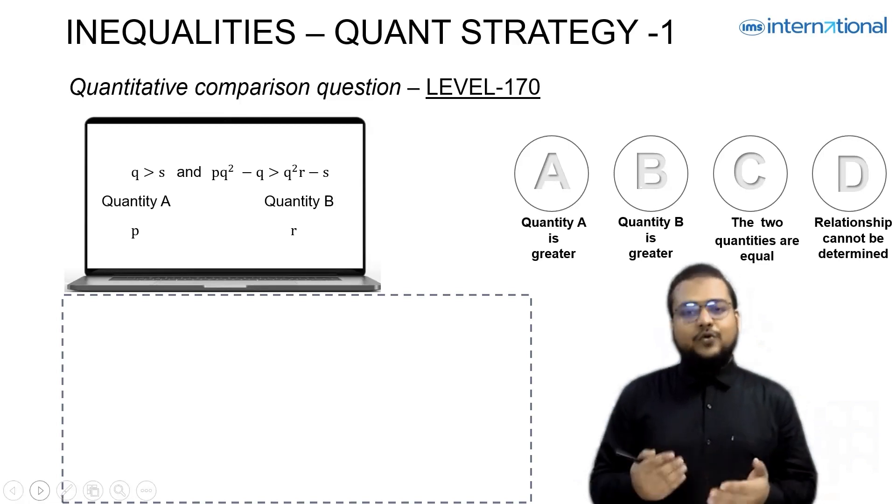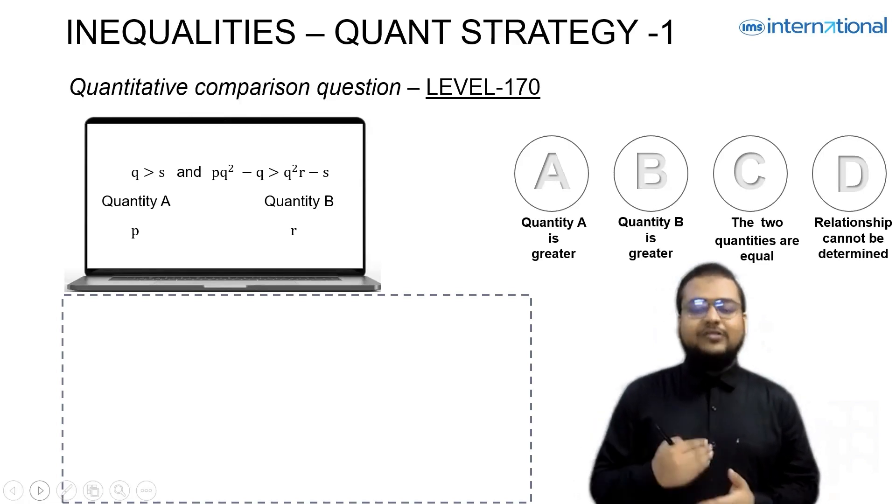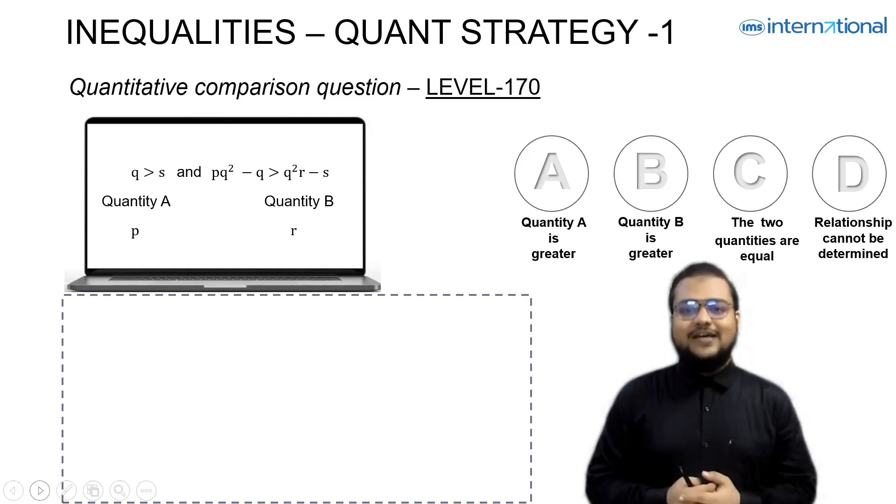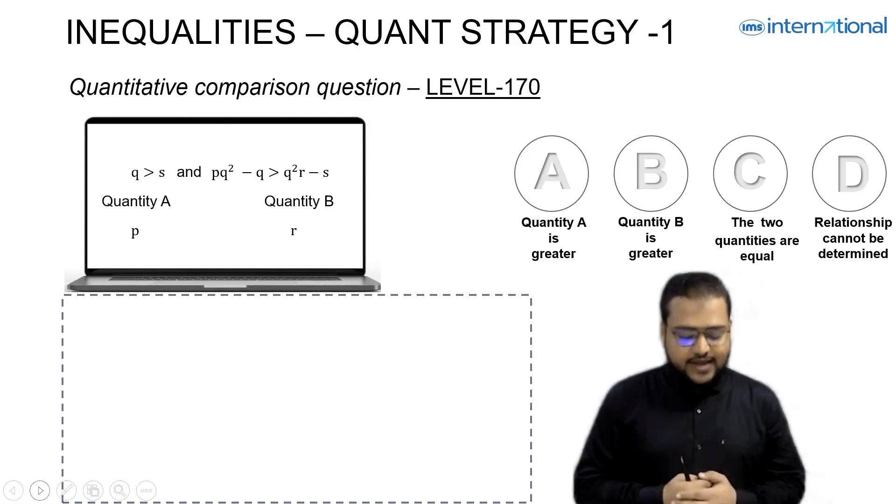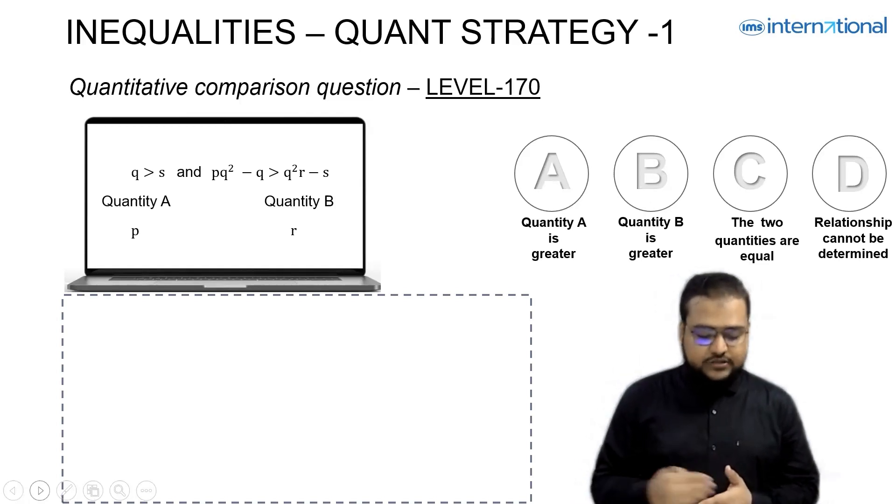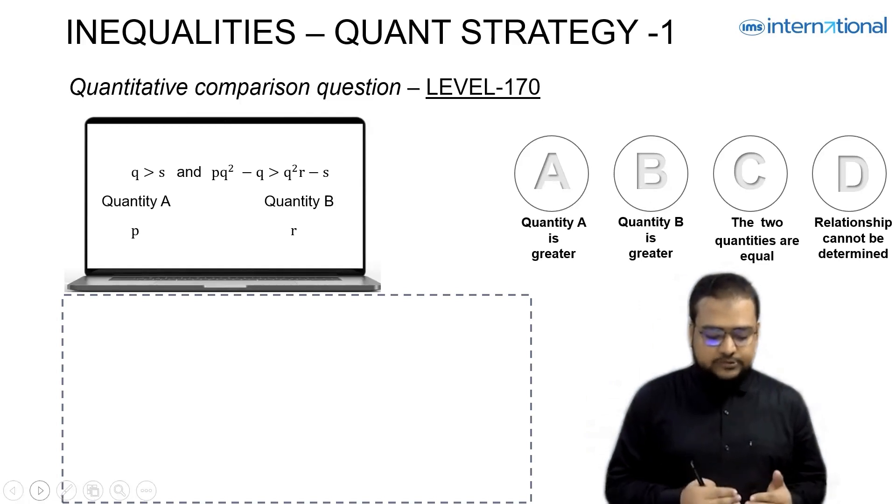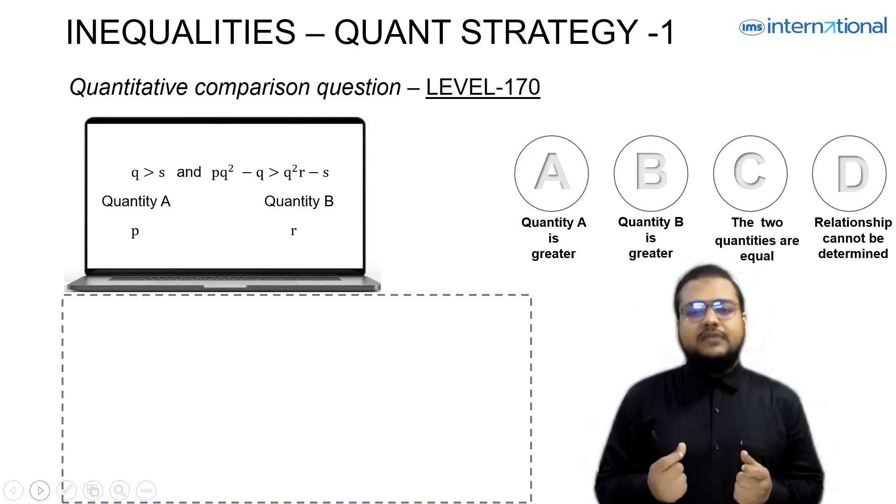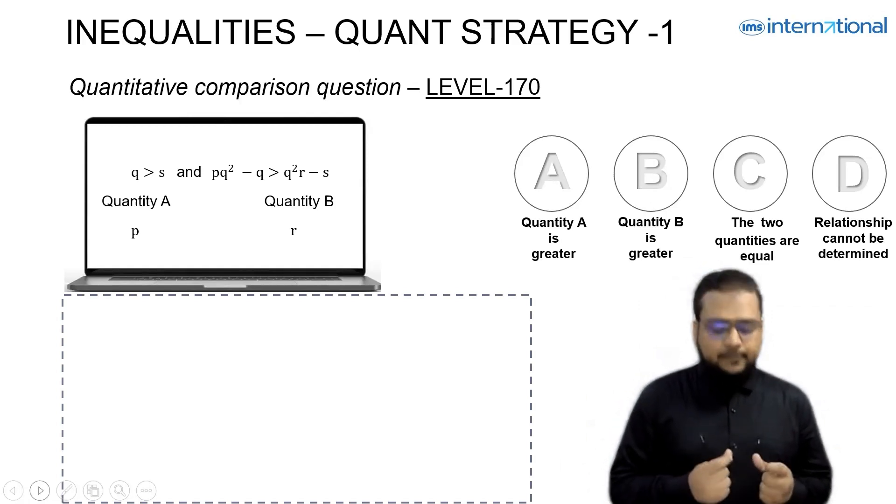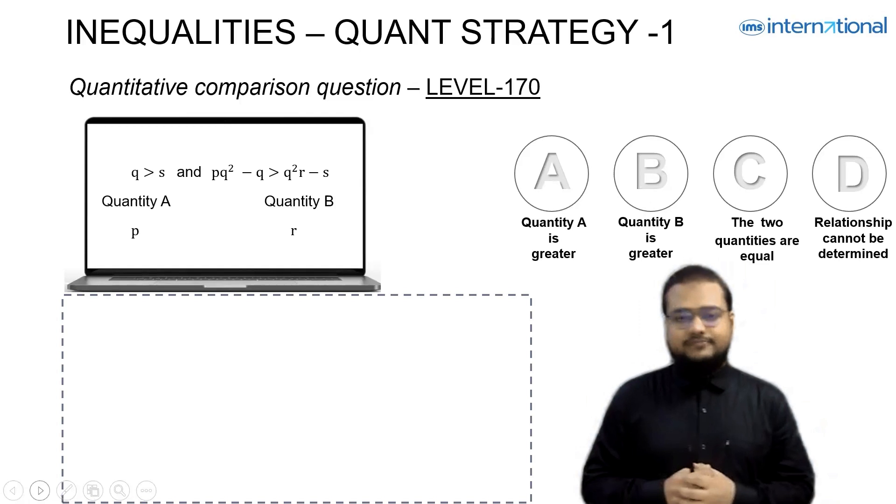Let's begin and learn the strategy for this particular question. Meanwhile, if you wish, you can pause the video, solve the question, and then join me back. I hope you have done that. Let's discuss this question. Q is greater than S, and PQ² - Q is greater than Q²R - S. Quantity A is P, quantity B is R. My focus should be on how can I get some inequality or some way to compare variable P and variable R.